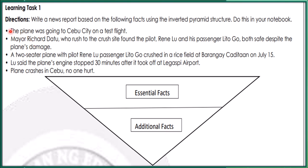Let us read so that we can analyze. The plane was going to Cebu City on a test flight. Mayor Richard Datu, who rushed to the crash site, found the pilot, René Lu, and his passenger, Lito Go, both safe despite the plane's damage. A two-seater plane with pilot René Lu and passenger Lito Go crashed in a rice field of barangay Kaditaan on July 15. Lu said the plane's engine stopped 30 minutes after it took off at Ligaspis Airport. Title: Plane Crashes in Cebu, No One Hurt.